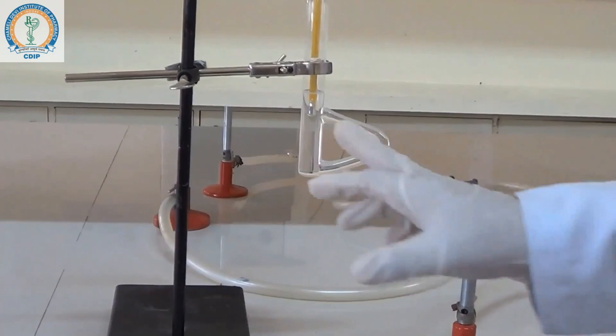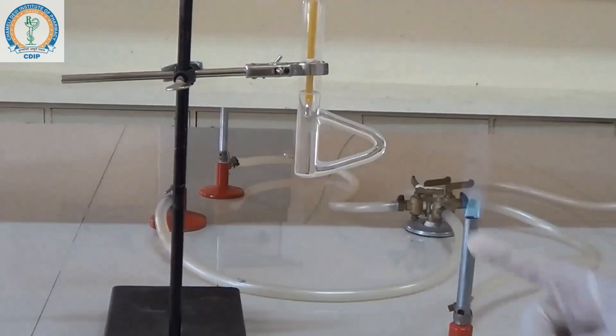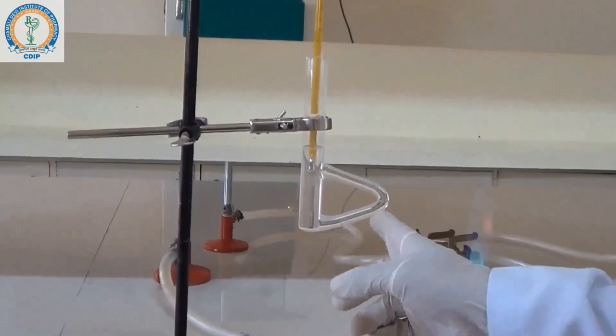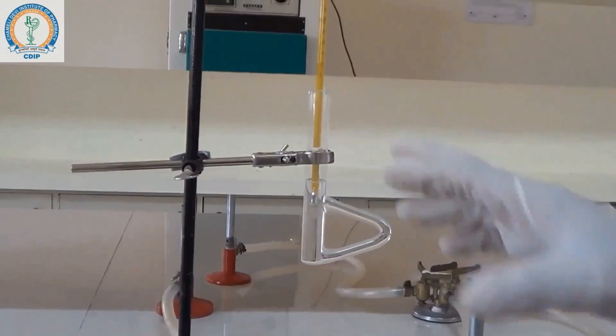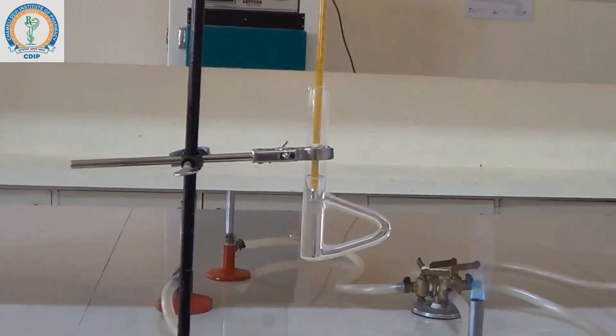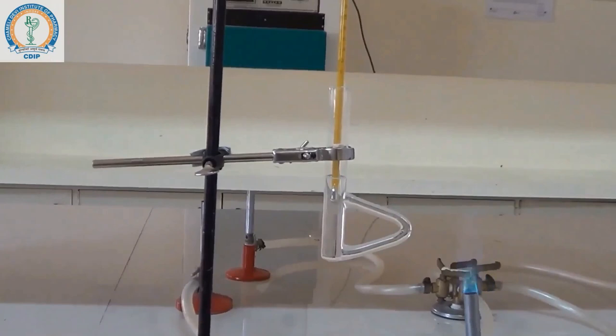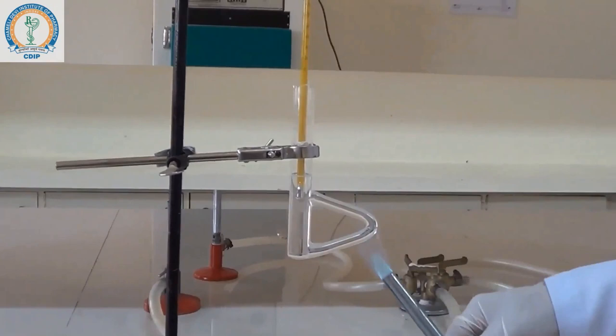This is the complete setup for the determination of melting point. In this tube, we have filled liquid paraffin up to just above the triangular arm. We have inserted the thermometer, which is tied along with the capillary tube filled with the substance to be examined. We need to put the flame over this triangular portion like this.